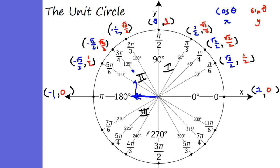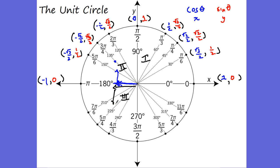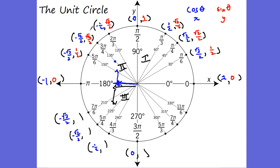In quadrant three, to get anywhere we have to go negative in x and negative in y. All of our x's are negative: negative root three over two, negative one-half, with zero at the boundary. The y values are also negative — so rather than going up one-half, we go down negative one-half; not up root two over two but down negative root two over two; not up root three over two but down negative root three over two.